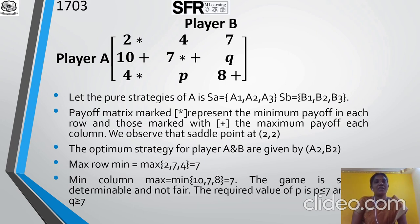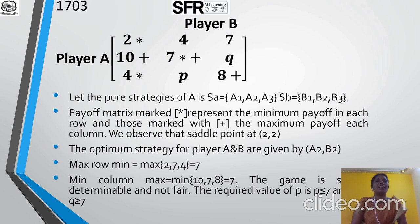Take Problem 1702 as a homework problem. Now let us see Problem 1703. Player A, Player B. The 3×3 payoff matrix entries are: 2, 4, 7 / 10, 7, Q / 4, P, 8. Let the pure strategies of A be SA = {A1, A2, A3} and SB = {B1, B2, B3}. The payoff matrix — marked star — represents minimum payoff in each row and those marked plus the maximum payoff in each column. We observe the saddle point at position (2, 2). The question is: for what condition is the game strictly determinable? So we need to find the range or bounds for P and Q.